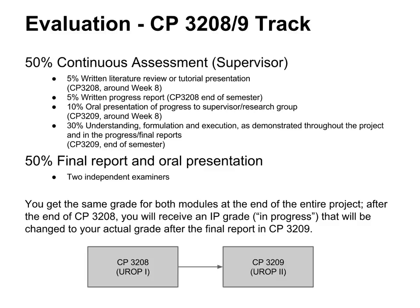You only get the grade for UROP at the very end. After completing CP3208 in the two-semester version, you'll receive an IP — in-progress — grade. There's no difference between your final grade for CP3208 and CP3209; they will be exactly the same grade. Your IP grade will be transformed by the registrar to whatever grade it's actually going to be after the examiners and your supervisor confer and award you a final grade.